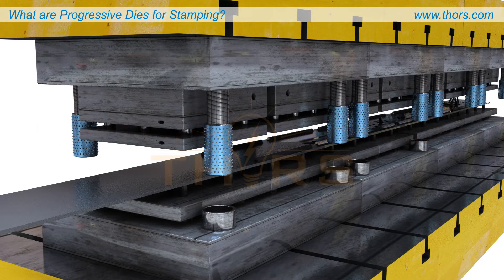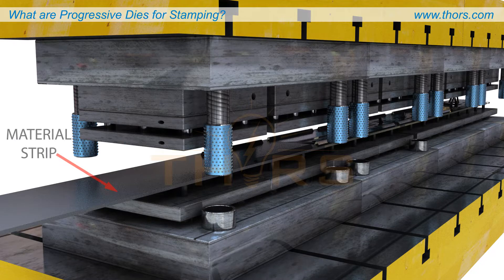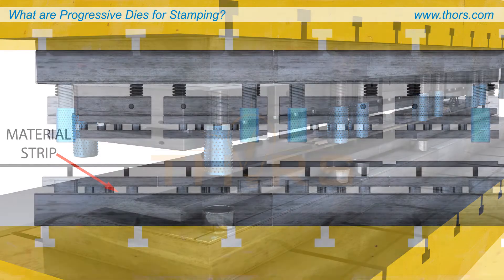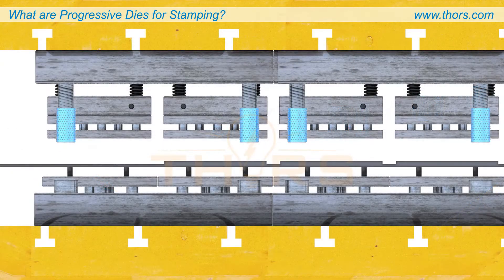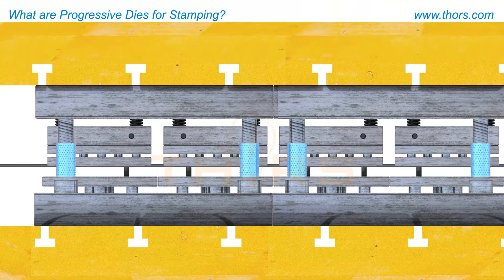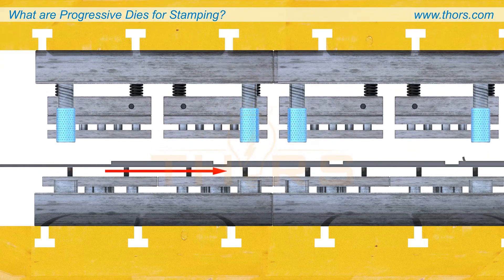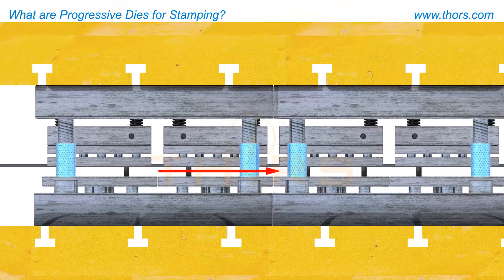Progressive dies perform multiple processes to a part that is contained within the material strip. The part is sequentially moved within the die from one process to the next, or from one station to the next.